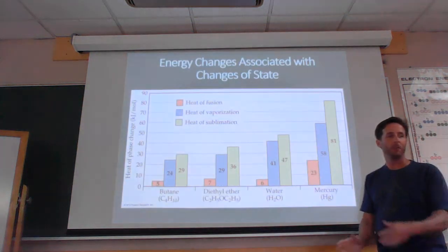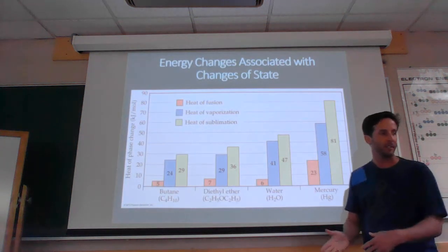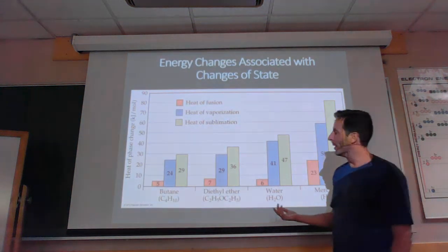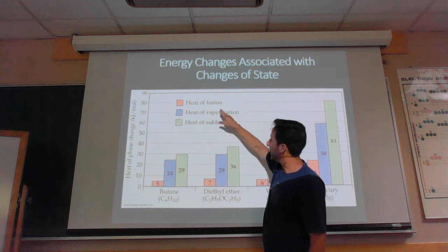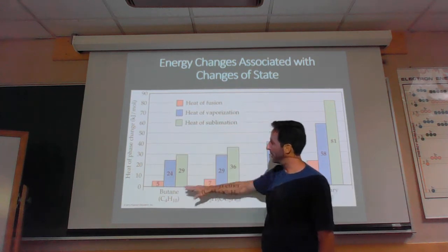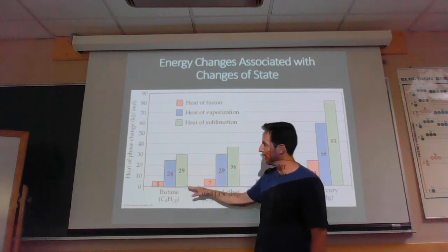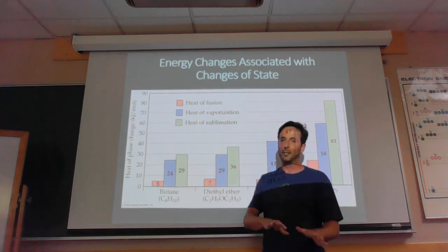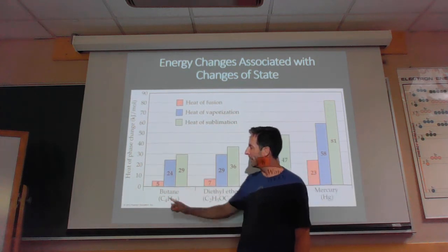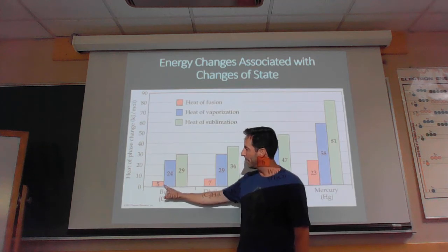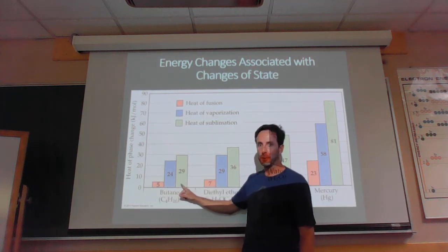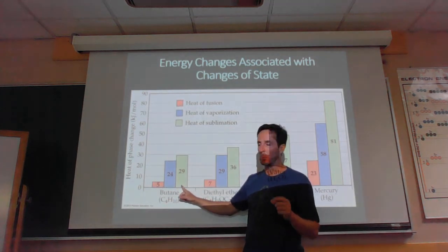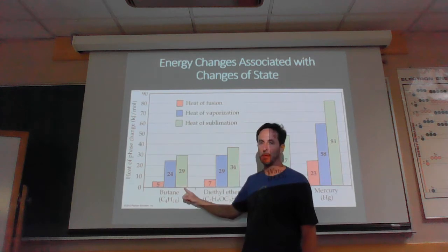Looking at a few different substances, the heat of fusion, vaporization, and sublimation are all listed in a table. You might notice that adding the heat of fusion and the heat of vaporization together should be pretty close to equal to the heat of sublimation.